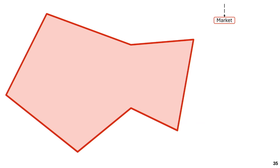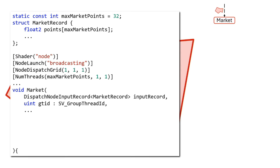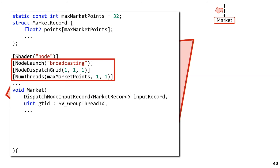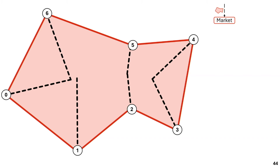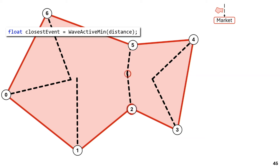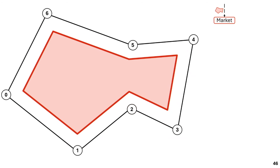We have our example polygon and a market node in the work graph that receives this polygon as input. In code, the market node kernel receives an input record — a struct containing the polygon's points. When launched, we receive one thread group of 32 threads, giving us one wave. We assign one thread to one corner of the polygon and compute when the next event will happen for that point. To find the closest event we use a wave intrinsic — in this case thread 2 or corner 2 — and determine how far we can shrink the polygon before handling anything.